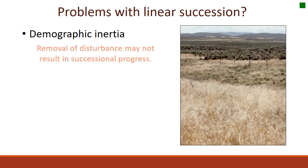One reason is demographic inertia — sometimes we might have non-climax competitive species that remain dominant no matter what kind of disturbance is removed. For example, if we have a cheatgrass monoculture, then even when we remove disturbance, we often don't see that successional progression start to occur.